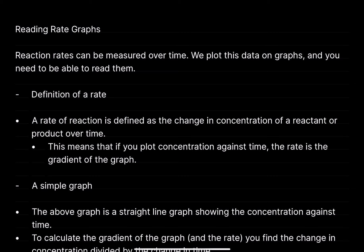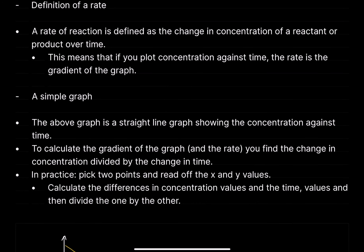Reaction rates can be measured over time when you plot data on graphs, and you need to be able to read them. The rate of reaction is defined as the change in concentration of a reactant or product over time. This means that if you plot concentration against time, the rate is the gradient of the graph — that's pretty self-explanatory from basic maths.